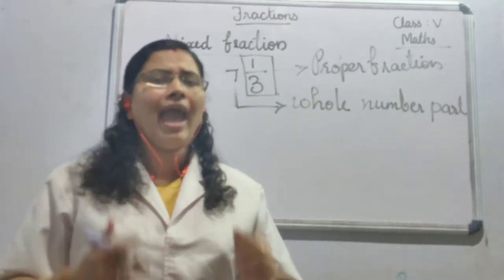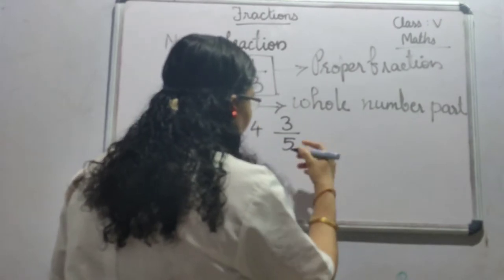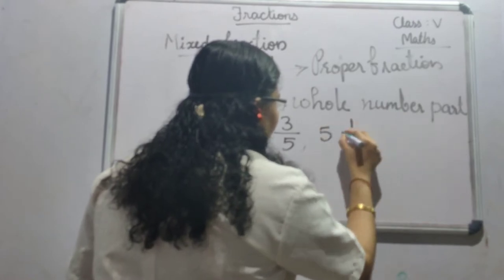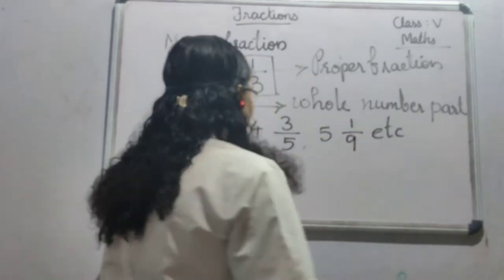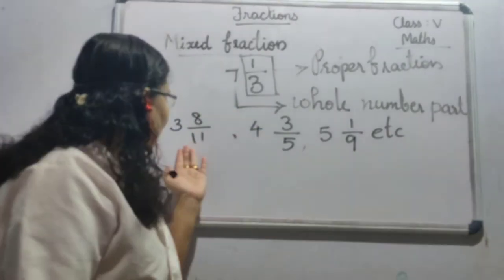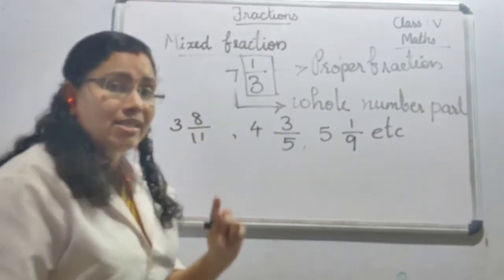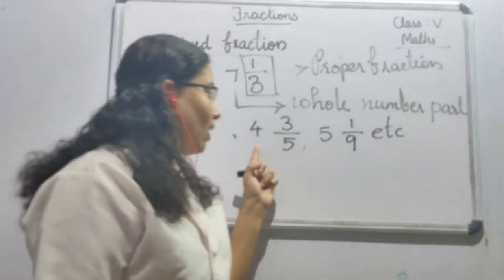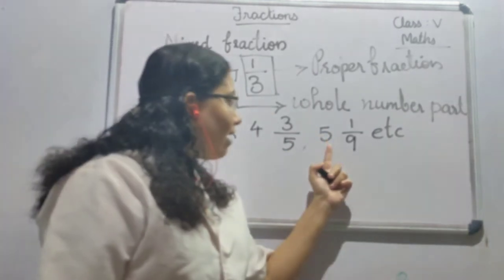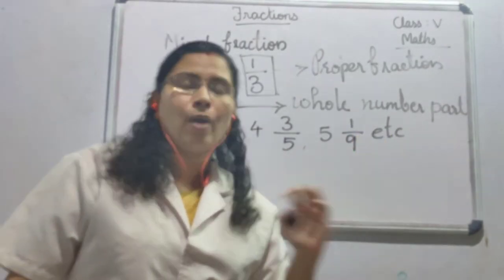Here are some examples of mixed fractions: 3 and 8/11, 4 and 3/5, 5 and 1/9, and so on. If you look at 3 and 8/11, then 3 is the whole number part and 8/11 is the proper fraction. In 4 and 3/5, 4 is the whole number part and 3/5 is the proper fraction. And in 5 and 1/9, 5 is the whole number part and 1/9 is the proper fraction.